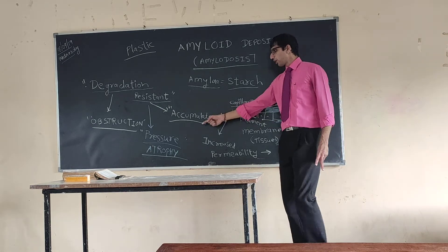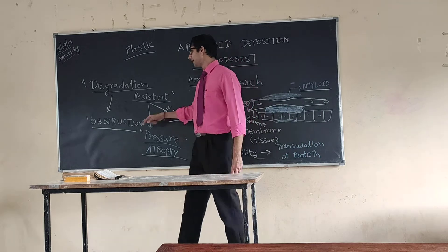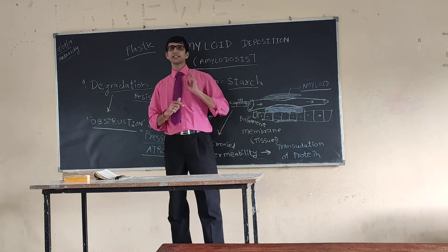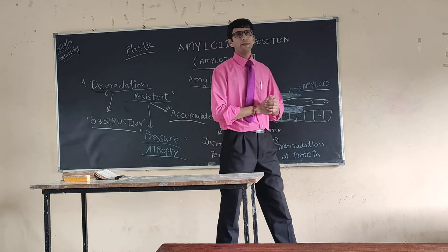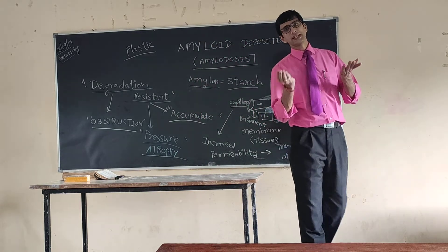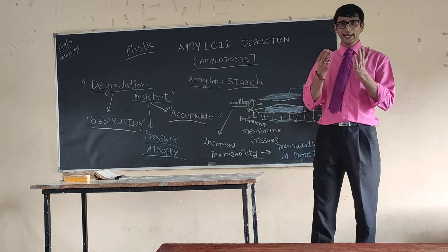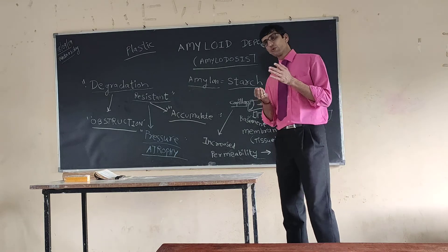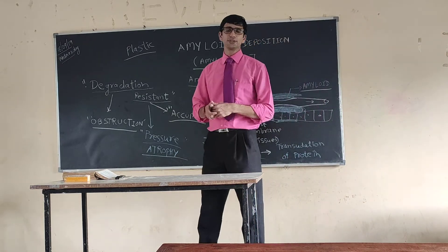So pressure atrophy and obstruction are very important points about amyloid. It is of two types: amyloid light chain, AL and AK. We will be seeing that in the next video.